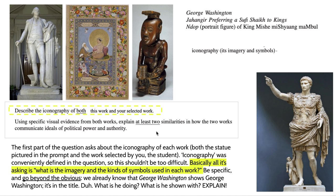The first part of the question says: 'Describe the iconography of both this work and your selected work.' What's great is that they define iconography for you — it's asking what the imagery and symbols are used in each work. I highly recommend being specific and going beyond the obvious. I can't tell you how many essays I've received where a student says 'the statue of George Washington shows the historical figure of George Washington.' Talk about what he's doing, what he's shown with — what about this statue is conveying information about him?